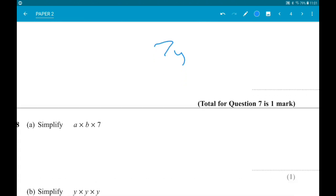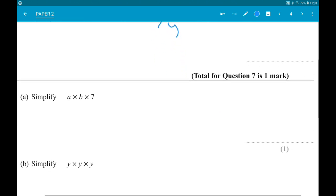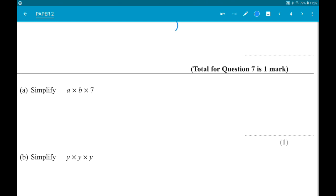Question 8A: Simplify A times B times 7. So A times B is AB. Multiplication doesn't matter which order we do it in, so we can write this as 7AB.